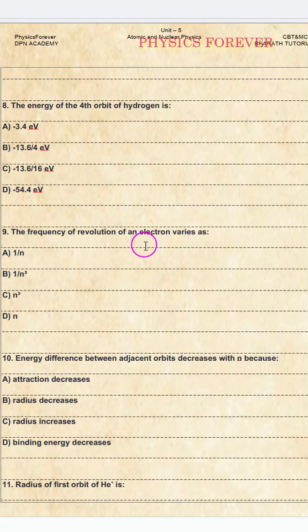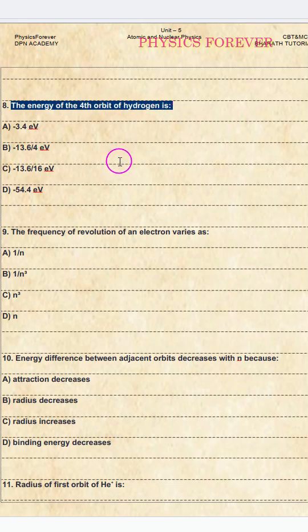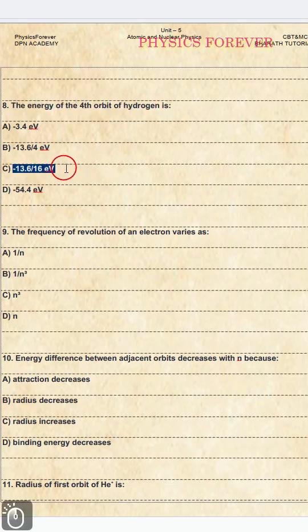Question number eight: the energy of the fourth orbit of hydrogen is? The correct option is C.